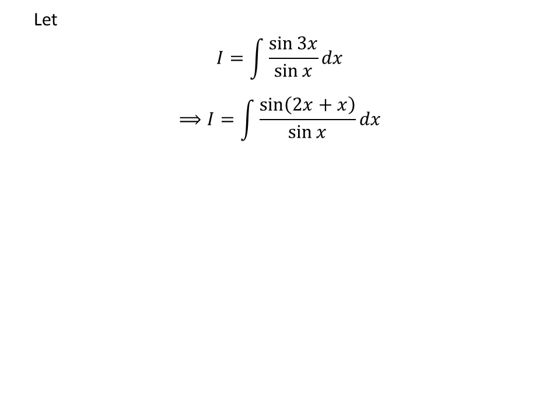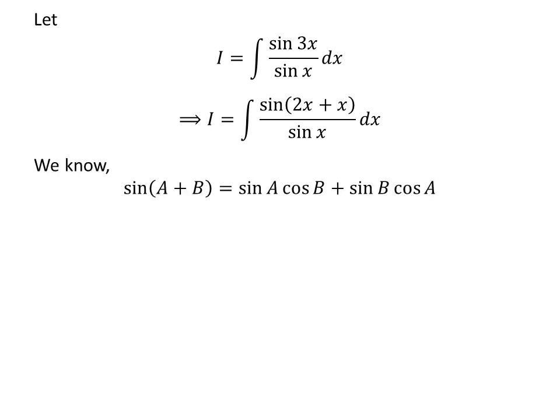Since 3x equals 2x plus x, I is equal to the integral of sin(2x + x) upon sin(x). Using the identity sin(a + b) = sin(a)cos(b) + sin(b)cos(a).